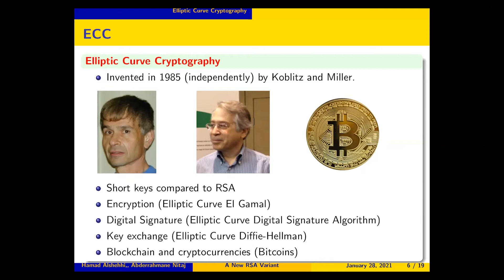Elliptic curve cryptography has many characteristics such as short keys compared to RSA. It can be used for encryption — for example, the elliptic curve ElGamal — for digital signatures — the elliptic curve digital signature algorithm — and for key exchange — elliptic curve Diffie-Hellman. It is mainly used today for blockchain and cryptocurrencies such as Bitcoin.